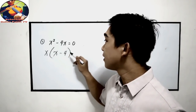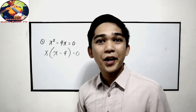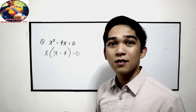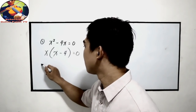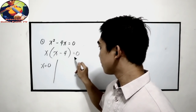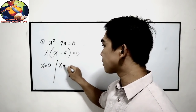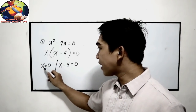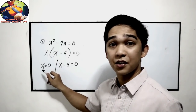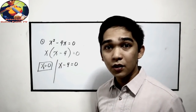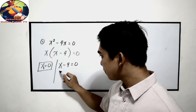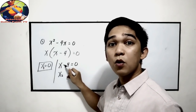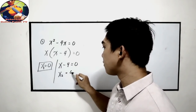Now we can get the value for x — equate to 0. So x is equal to 0. And the other factor is x minus 4 is equal to 0. x is equal to 0, this is already our final answer — we can box it. And x sub 2: transpose negative 4, it will become positive 4.